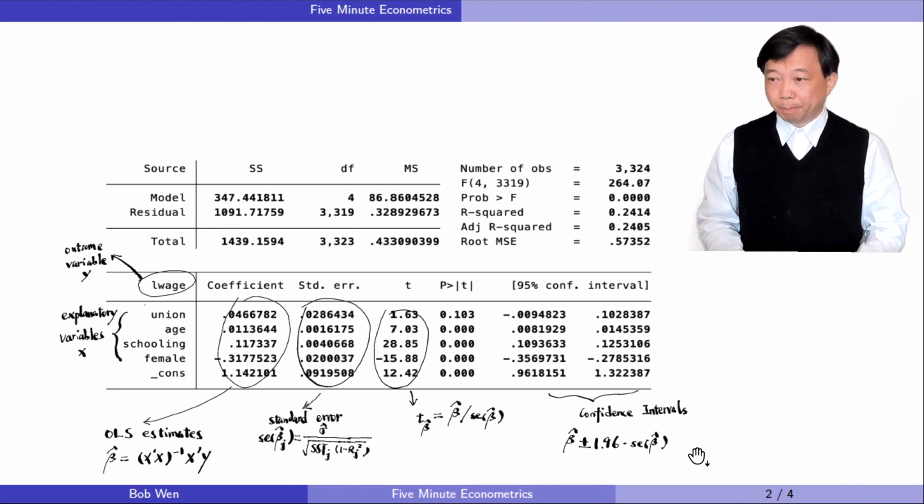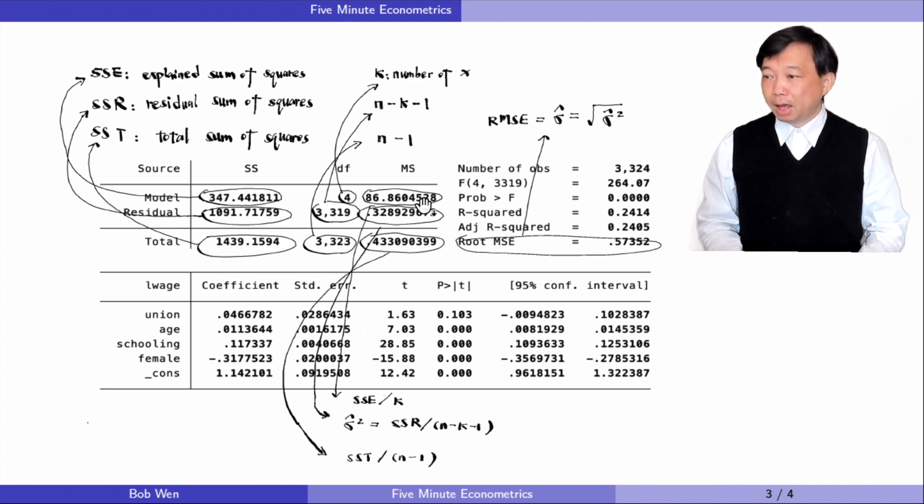Next, let's look at the upper part of the result window. The upper left is a table for the explained sum of squares, SSE, the residual sum of squares, SSR, and the total sum of squares, SST. I have adopted the names from the textbook Introductory Econometrics, A Modern Approach, by Professor Jeffrey Wooldridge. We see the degrees of freedom in the next column. The degrees of freedom for the total sum of squares are n minus 1, where n is the number of observations. The degrees of freedom for the explained sum of squares are k, the number of explanatory variables. There are n minus k minus 1 degrees of freedom in the residual sum of squares.